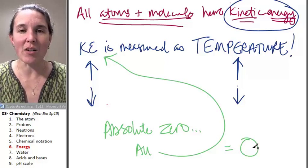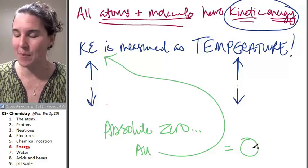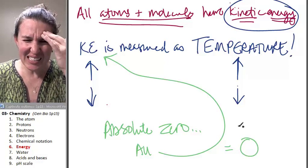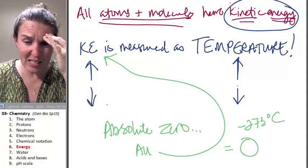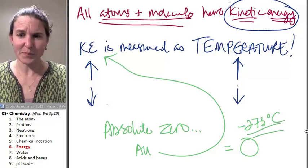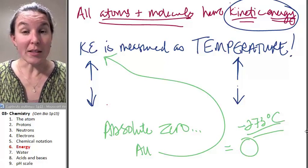It's theoretical. We've never been able to get something cold enough to absolute zero. And it's something like negative 273 degrees Celsius. I think that's what it is.